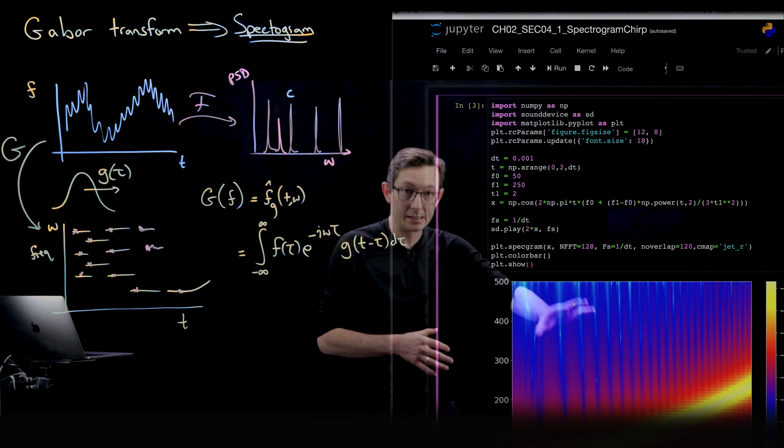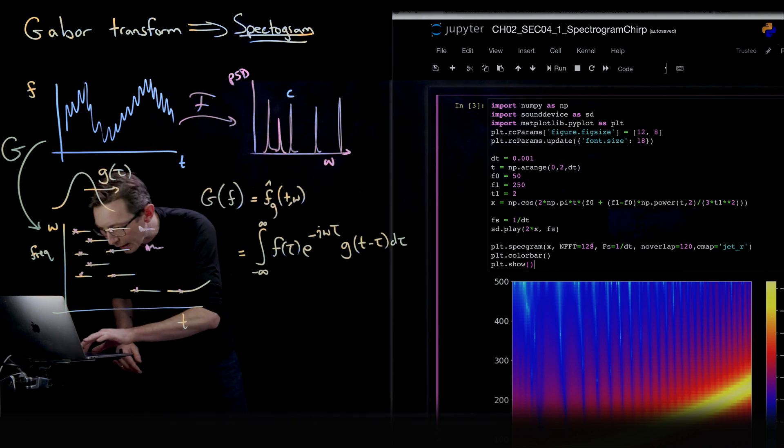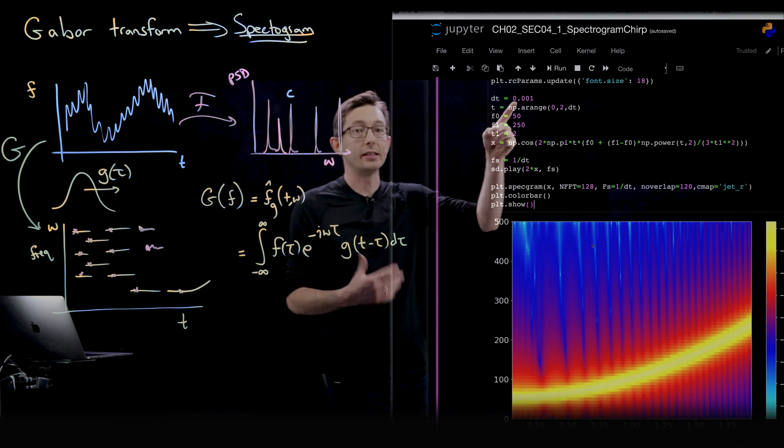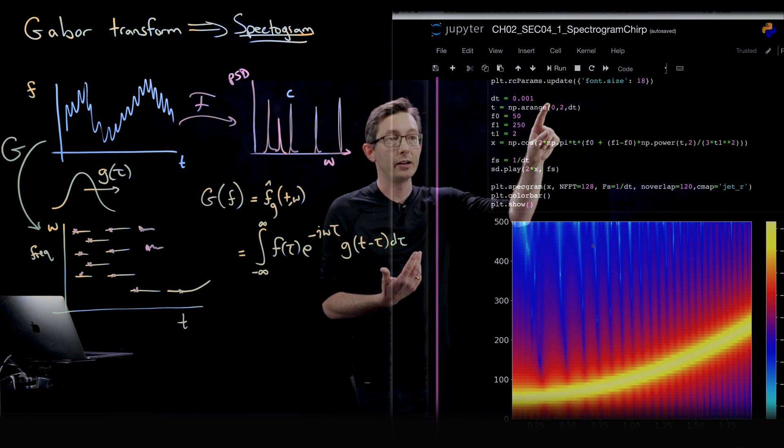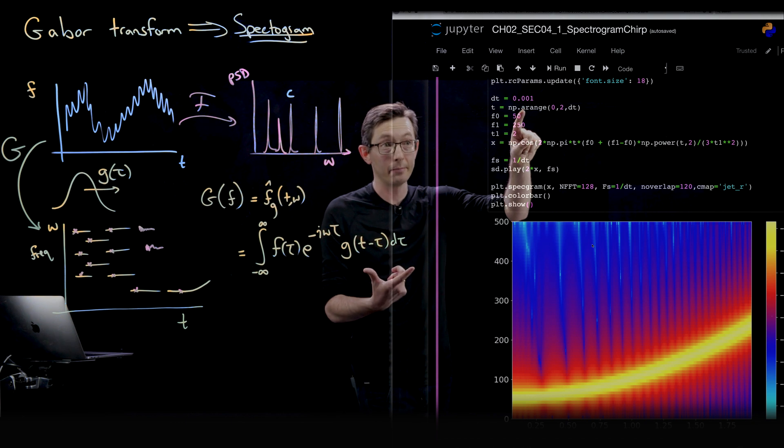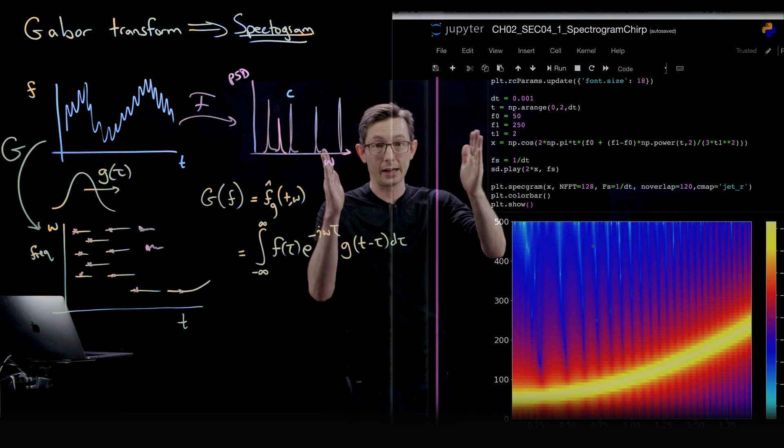And this is the spectrogram code for a chirp signal. So in Python, it's pretty simple to build an audio signal. We're going to have an audio signal with a delta T of 0.001, so one kilohertz sampling. We're going to define the time from zero to two, so two seconds of audio.